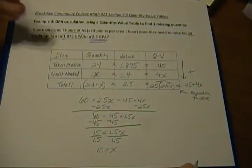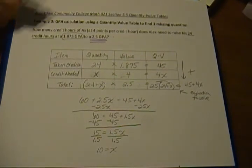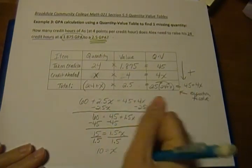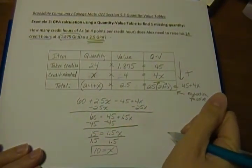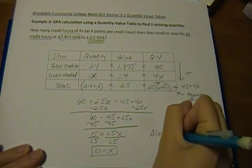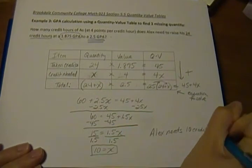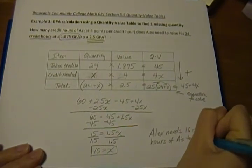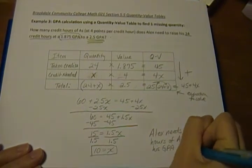So we have a word problem. The expectation is that our answer is going to be written in a sentence. It's going to be, our question is asked with words, so our answer should be given as words. So our answer, and then we have X equals 10, is that Alex needs 10 credit hours of A's to raise his GPA to a 2.5.